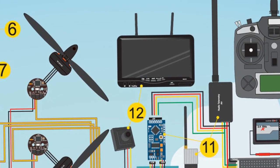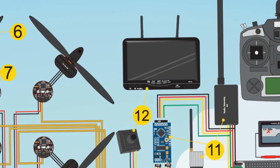First person view (FPV) allows viewing on a screen a view from the camera mounted on the drone. The camera might be mounted on a gimbal system to move and stabilize it.